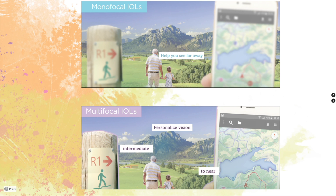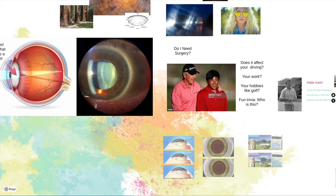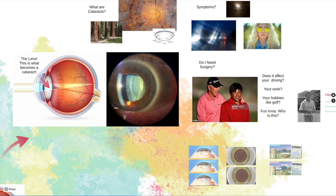There are two types of lens implants available. A monofocal lens has one focus point, usually set for far away, so with this lens you will need reading glasses for up close. In contrast, a multifocal lens has multiple focal points, meaning you can see far away, at intermediate distance, and up close. That's a crash course on cataracts.